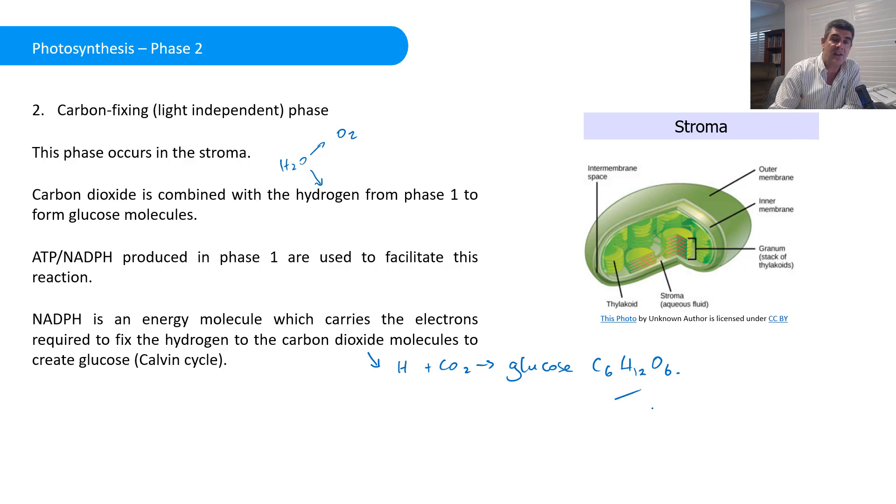Again, we are oversimplifying things, but we have to because it's such a complex system. This process is known as the Calvin Cycle. If you really want to be scratching your head for a bit, go and have a look at the Calvin Cycle. It's a great biochemical pathway, but it is more complex than you need to look at for your Year 11 Biology course.